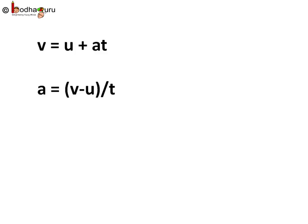So we saw v is equal to u plus at or acceleration a is equal to v minus u divided by t. That is acceleration a is equal to change in the velocity divided by time. And its unit is meter per second square.